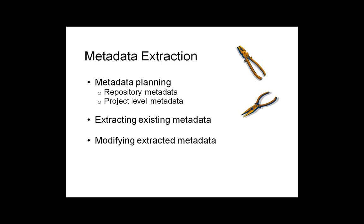Ideally, we'd love to have all our systems seamlessly sharing data, but for most of us that's just not our reality. If you have useful metadata in systems that don't communicate, you may still be able to work around those silos by finding a way to extract or export the metadata you want to use. This next portion of the webinar will focus on extracting siloed metadata and reusing it in your institutional repository. I'll start with the need to have a metadata plan or guidelines — both for your repository and for each digitization project — then talk about ways to extract existing metadata, and finally how to modify it with XSLT.